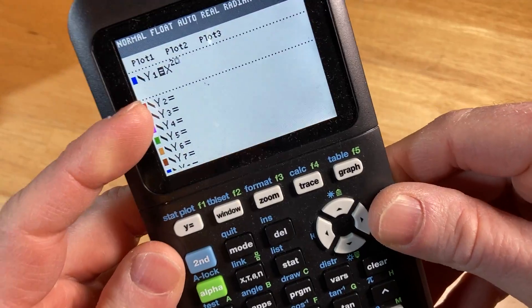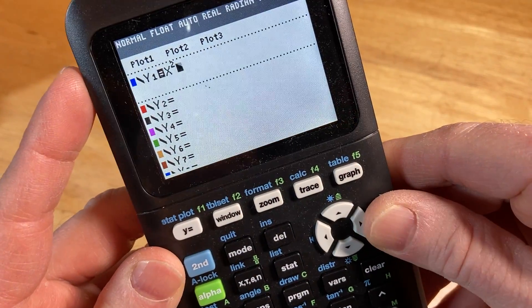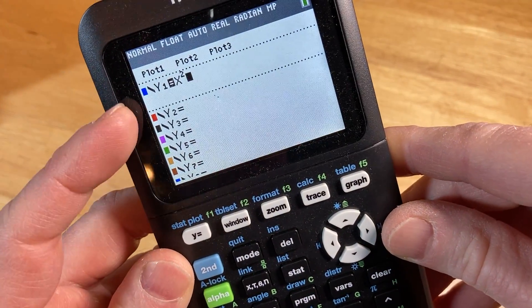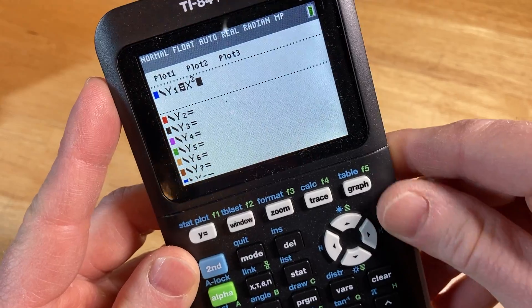So notice it's still up there, so I'm going to press the right arrow key to bring it back down. So now we have y sub 1 equals x squared, so let's go ahead and hit graph.